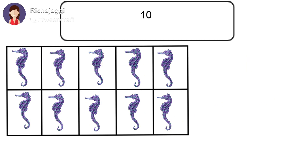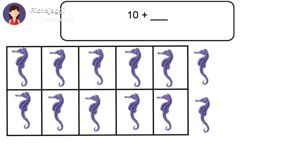There are 10 seahorse in the box. 10 plus blank — what will come in this blank? To find out this number, we will count how many seahorse are there outside the box. 1, 2. There are 2 seahorse outside the box. So our question is 10 plus 2.